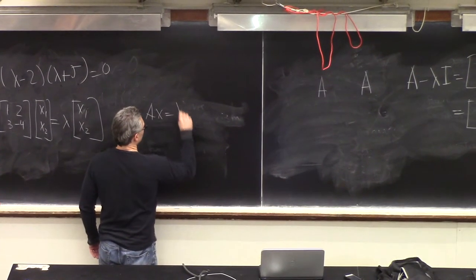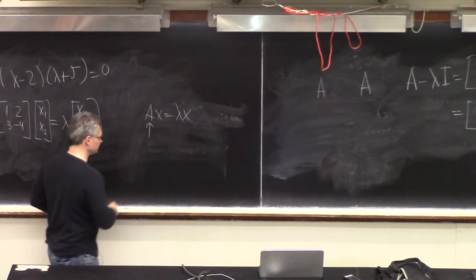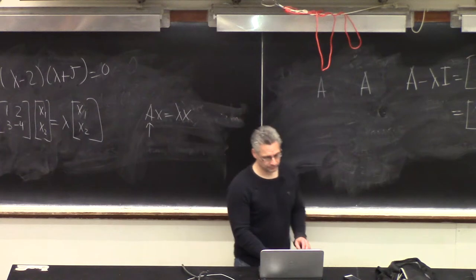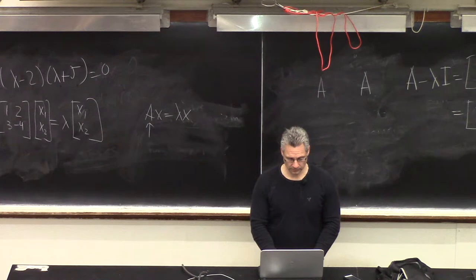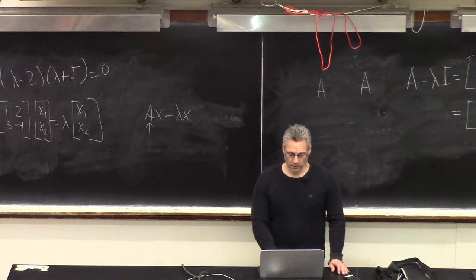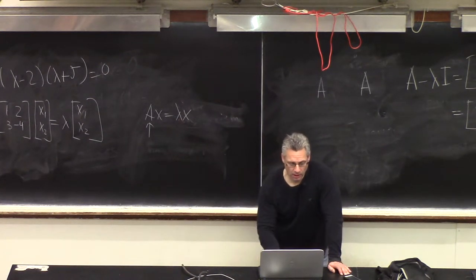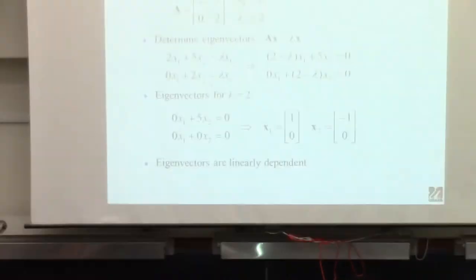AX equals lambda X for this particular A matrix. If I do that, I get 2X1, 5X2 equals lambda X1, and 0, 2 equals lambda X2. Pull all the terms onto the left-hand side, gather the terms involving X1, gather the two terms involving X2, and you get this.